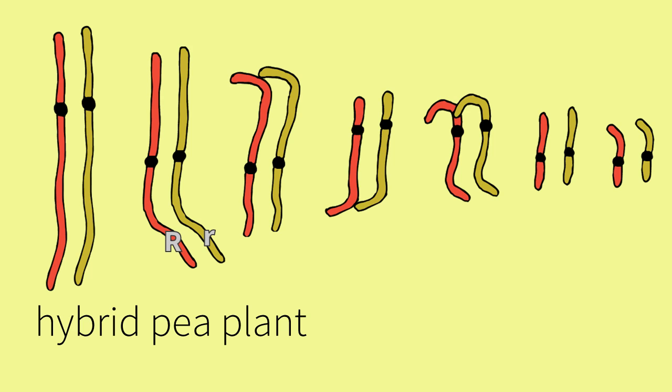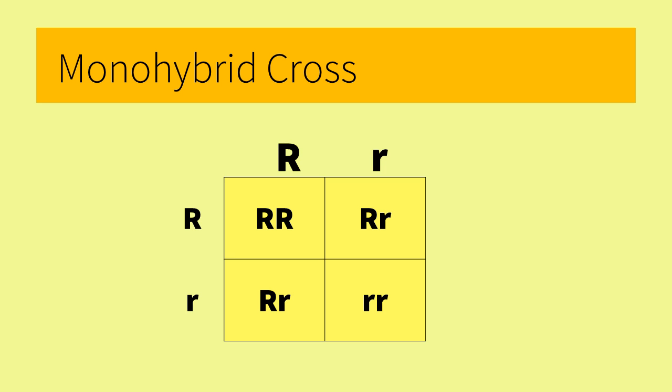Recall the cross of F1 organisms produces the F2 generation. This generation will have one big R on one of its homologues and a small r on the other homologue, which means it is hybrid or heterozygous. This cross is a monohybrid cross, since each parent is heterozygous or hybrid for that trait, shown by the gametes on the outside of the box as big R and little r.